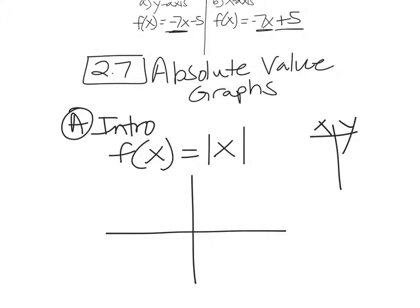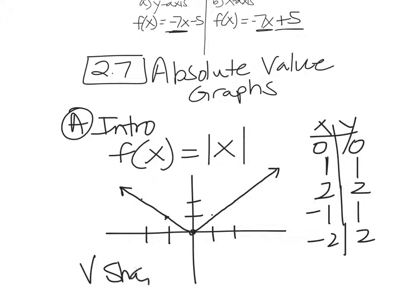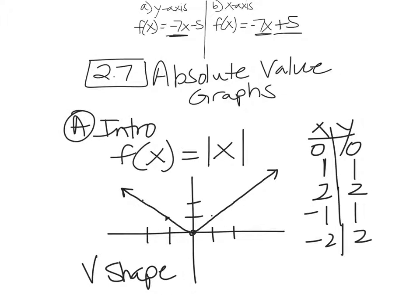Suppose you have the absolute value of x and we need to graph this. Let's make a little t-chart. When x is 0, the absolute value of 0 is 0. Absolute value of 1 is 1. Absolute value of 2 is 2. Absolute value of negative 1 is 1. Absolute value of negative 2 is 2. Plotting those five points: (0,0) is the vertex, (1,1), (2,2), (-1,1), (-2,2). The shape is a V. Absolute value is a V shape; parabola is a U shape. That's your basic parent function.